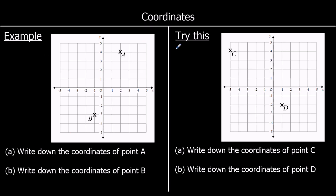Here we can see a set of axes. We have an x-axis that runs horizontally and a y-axis that runs vertically. We can describe the position of any point on this grid using its coordinates. To write coordinates, we use a bracket, then the x-coordinate — how many along — then a comma, then the y-coordinate. We always write coordinates this way: x first, then y. It's alphabetical — x comes before y in the alphabet, and x-coordinate always comes before the y-coordinate.